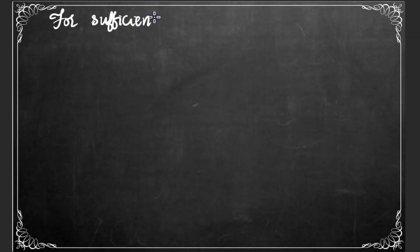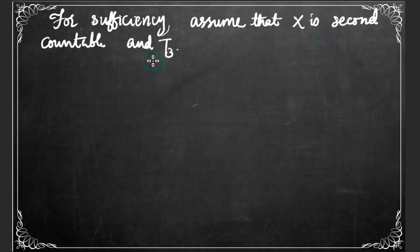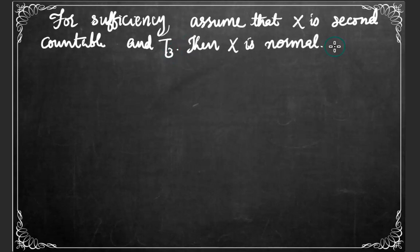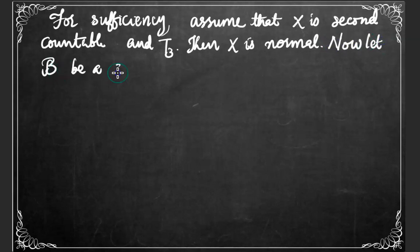For the sufficiency part, assume that the space is second countable and T3. But we know that every second countable T3 space is normal. Now, since the space is second countable, it will have a countable base for the corresponding topology. So let us consider B, a countable base for our space.